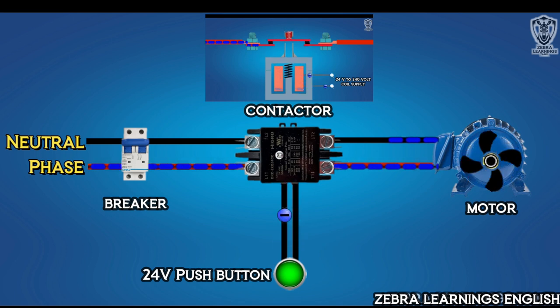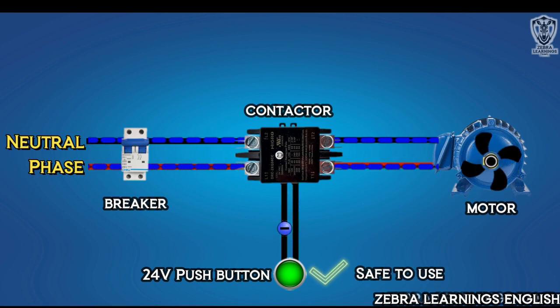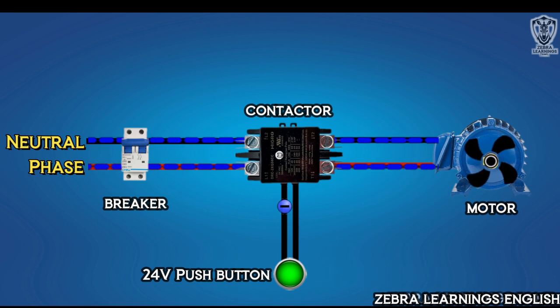With the help of this magnetic field, the terminal closes and the power supply flows. Now the motor starts running. As we operate only 24-volt power supply in the switch, it is very safe for users. This is why contactor is called a safety device.